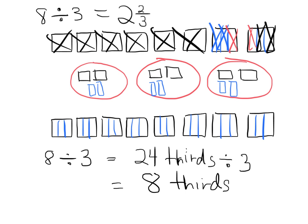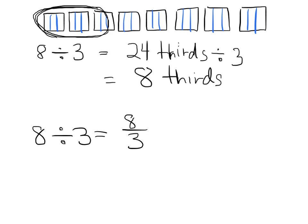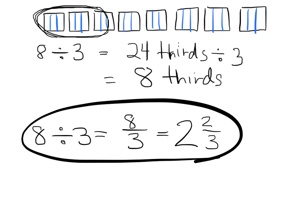Now 8 thirds — if you think about what 8 thirds is, that lands right here on the number line. Each person gets 8 thirds. And 8 thirds is 2 wholes plus 2 thirds. So the big takeaway is that 8 divided by 3 equals 8 thirds, and 8 thirds equals 2 and 2 thirds. Today we're really going to be moving toward the standard algorithm for changing an improper fraction like 8 thirds into a mixed number.